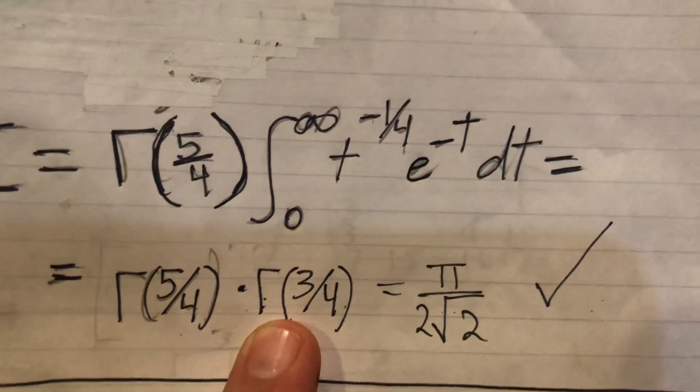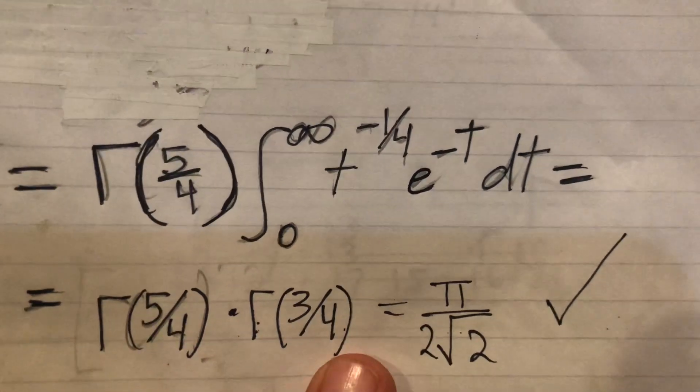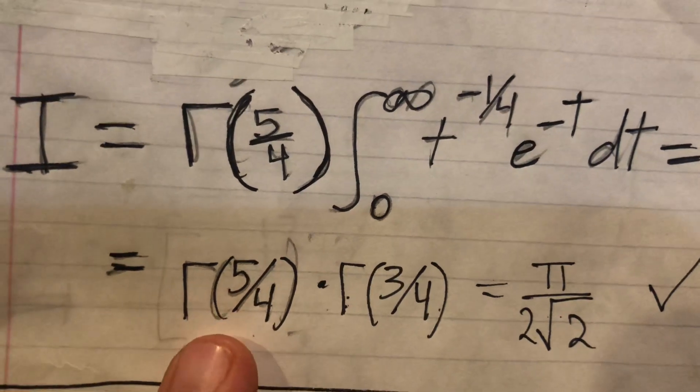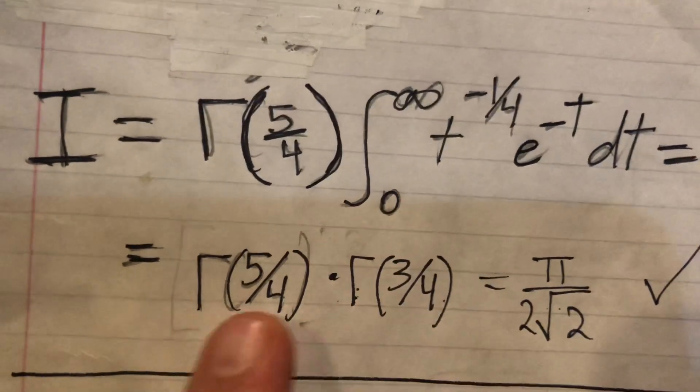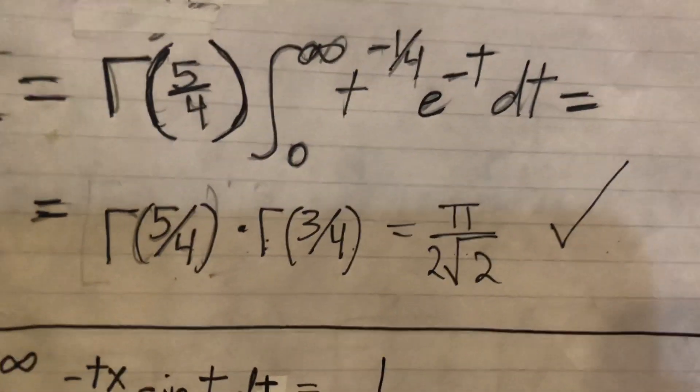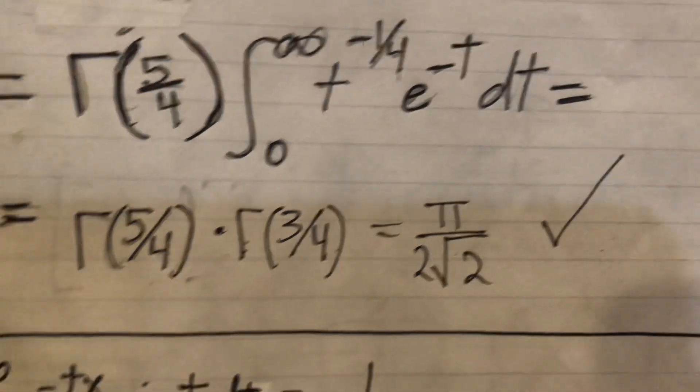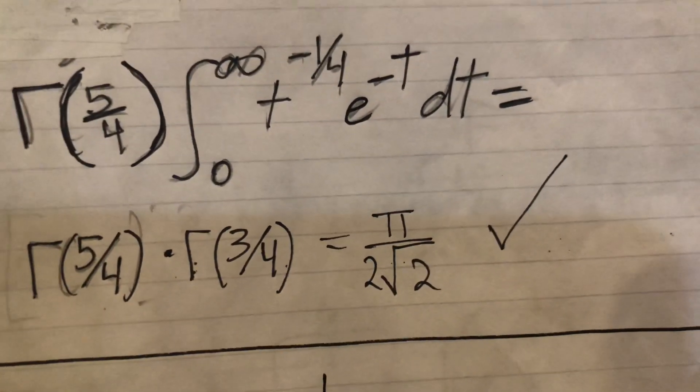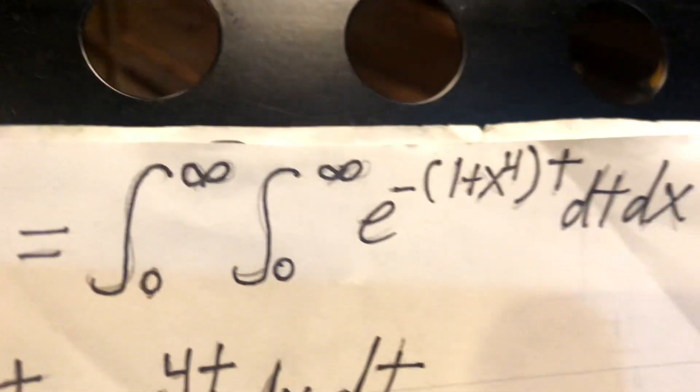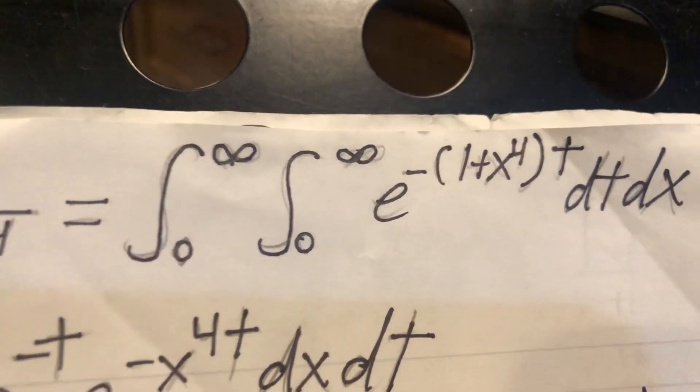So you do gamma of 5/4 times gamma of 3/4, put it into Wolfram Alpha - it can handle non-elementary functions like this - and there's our good old answer: pi over 2 root 2.